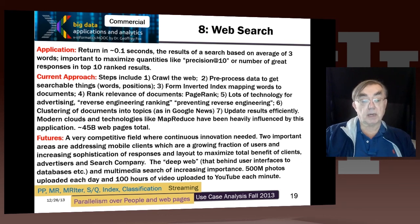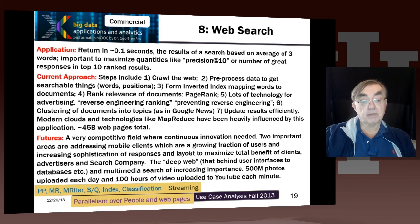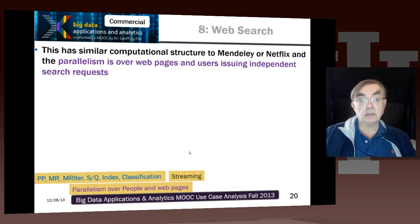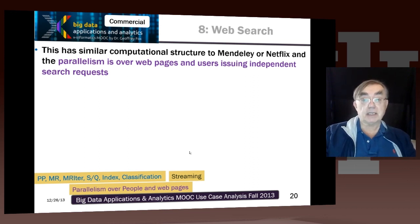People need to figure out how to get mobile clients to display ads and generate revenue. Another important issue is the deep web — the web that lies behind user interfaces to databases — where search is not so clear. An important area is also image search and video search, because more and more video and images are being uploaded: 500 million photos uploaded every day and 100 hours of video uploaded to YouTube every minute. This field doesn't introduce striking new techniques beyond what we've already covered, although it did actually initiate several critical techniques. The parallelism is over web pages, and also over the users issuing independent search requests.